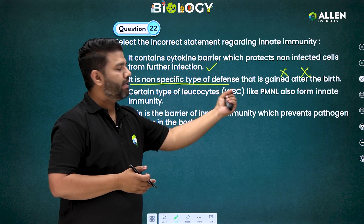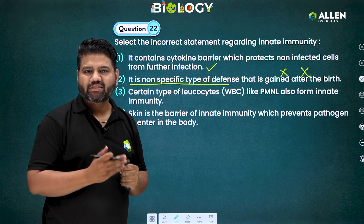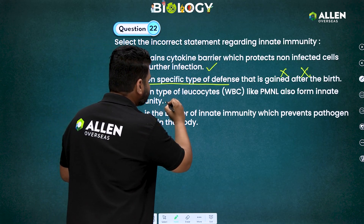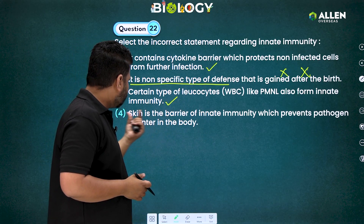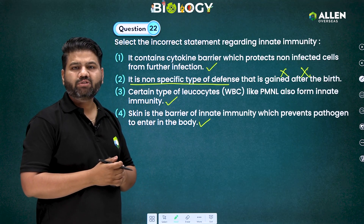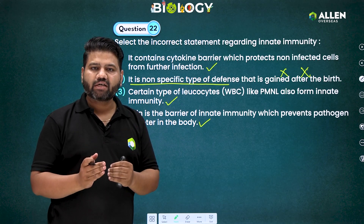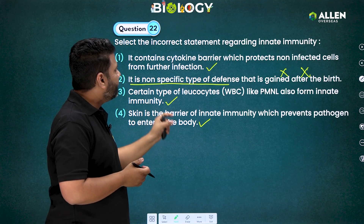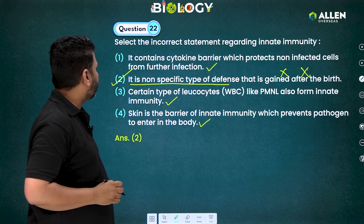The third statement says certain types of leukocytes (WBCs) like PMNLs, for example neutrophils, also form innate immunity. This is correct because it is part of the cellular barrier. The fourth statement says skin is the barrier of innate immunity which prevents pathogens from entering the body — also correct, as skin and mucous membranes form the physical barrier. The incorrect statement is the second one, making it the answer to question 22.